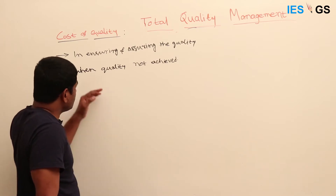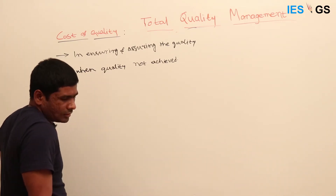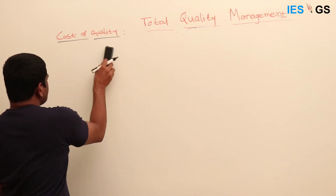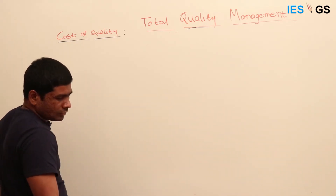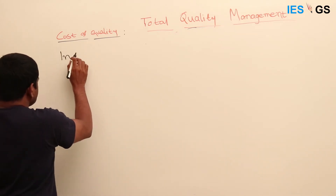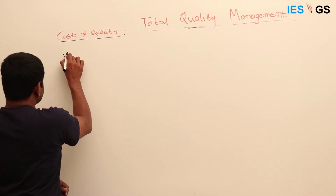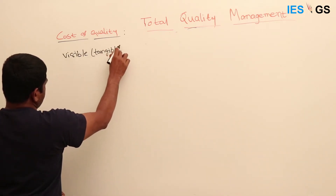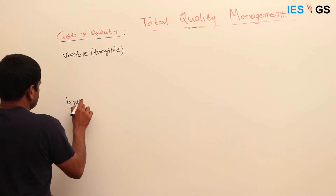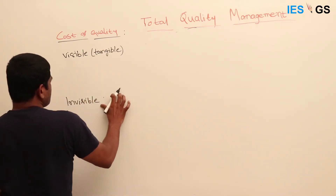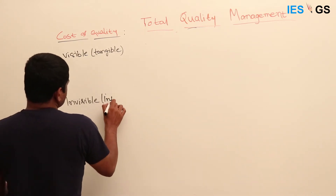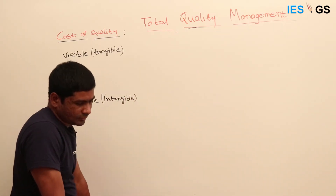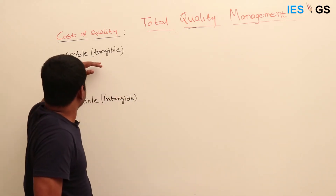So this is how we incur cost on quality. These costs are broadly divided into two categories: visible and invisible. Visible costs are also called tangible costs, and invisible costs are also called intangible costs.